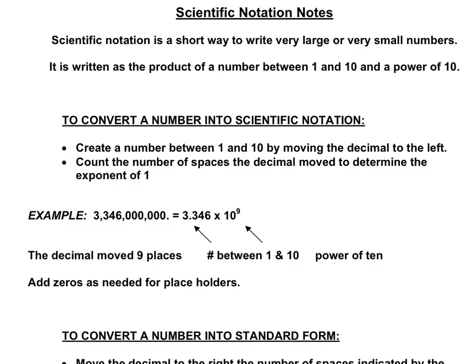So let's take a look at the example that we see here. We have a very big number there: 3,346,000,000. And we are shown that it can be written in scientific notation this way. Some key things here is that in scientific notation, the number in front is always between 1 and 9.9 repeating — in other words, it's always greater than 1 or less than 10. And then we multiply that by some power of 10.